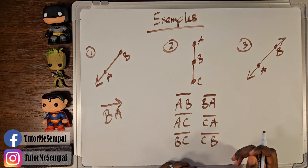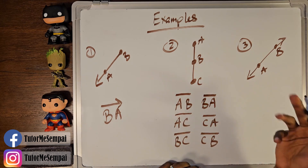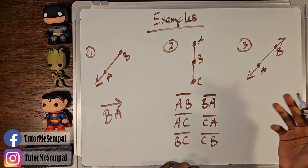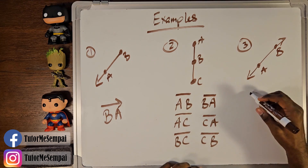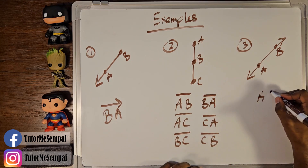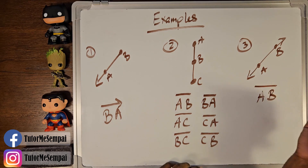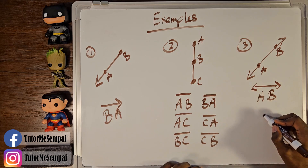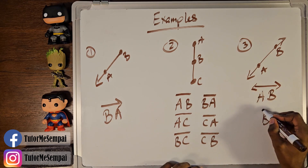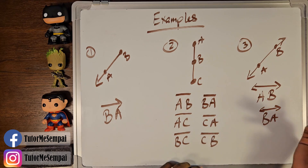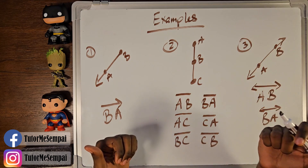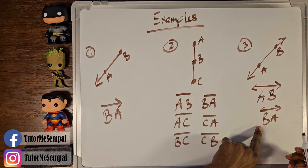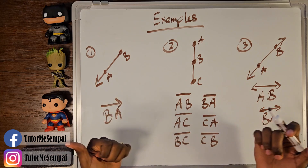Let's move on to number three. Here we have a line with points A and B, so how do we name this line? We're going to have A and B with a straight line on top — but because it's a line, we put our arrows there. We can also do BA because order doesn't matter. As long as it's a line going on forever in both directions, we can say AB or BA since there are two points on that infinite line.